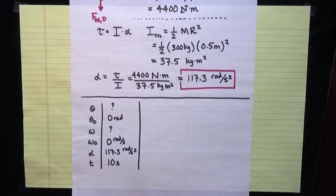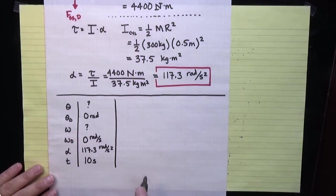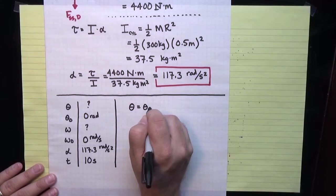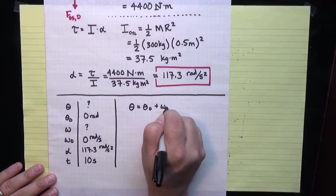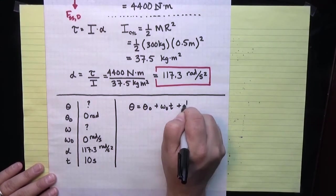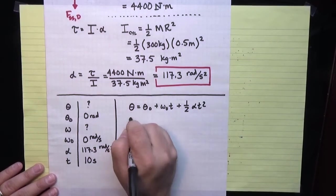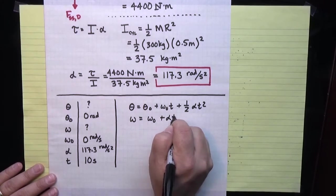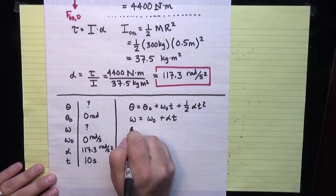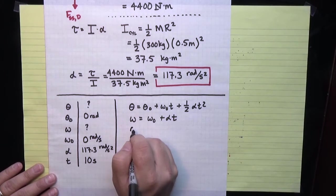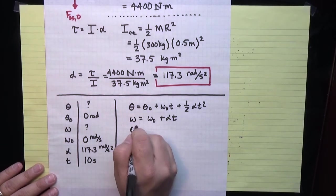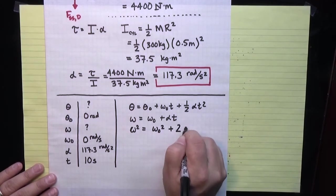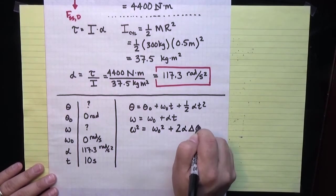In this case, I can choose any of the kinematics problems to work with, or kinematic equations. The three kinematics equations are theta equals theta naught plus omega naught t plus a half alpha t squared. I have omega equals omega naught plus alpha t. And I have omega squared equals omega naught squared plus 2 times alpha times delta theta.